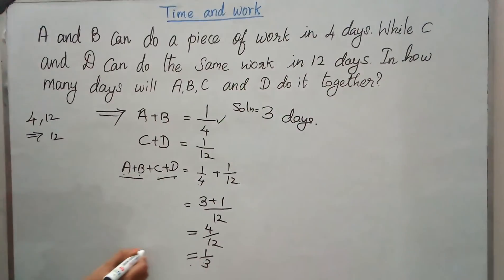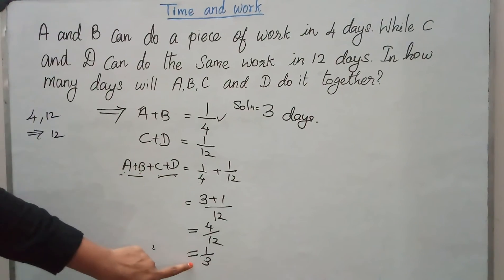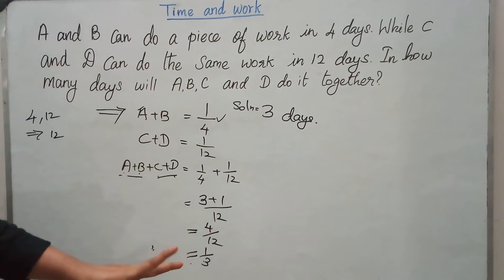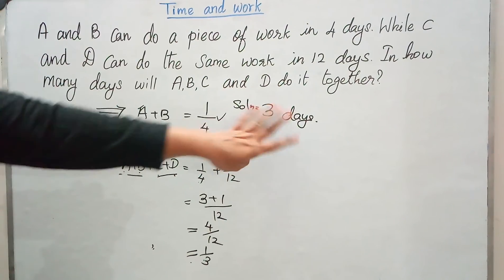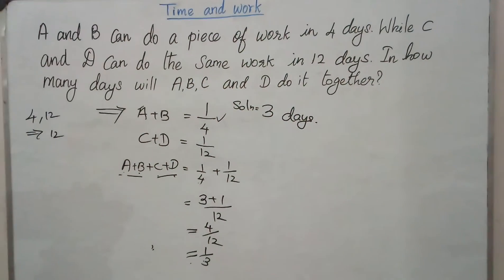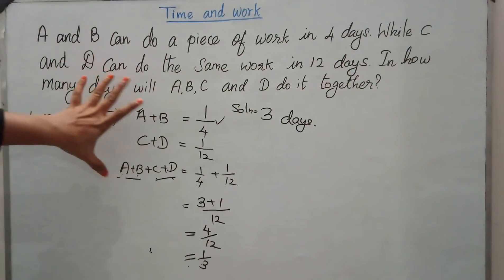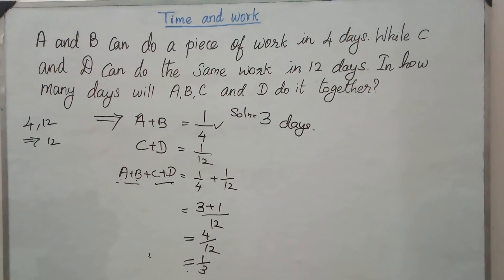Since A plus B plus C plus D can do 1 by 3 amount of work, if we invert this, our answer is 3 days. Got it? Similarly, you can solve this type of problem. This is simple addition based problem. We will work out some complicated problems in future.